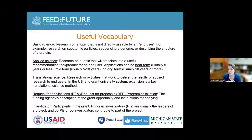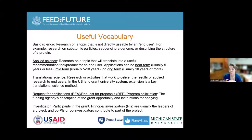Some useful vocabulary as we think through funding agencies or interpret calls for proposals: Basic science is a topic not directly usable by an end user — not necessarily stakeholder focused. Applied science is research that translates into a useful tool for a stakeholder, with applications near-term, mid-term, or long-term — greater than 10 years. Translational science is the work of taking applied research to the end user. At land-grant universities like MSU, extension is one of those key translational science methods.